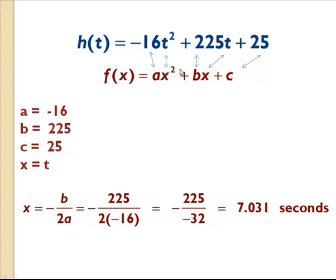When you have a quadratic in the form f(x) = ax² + bx + c, we can take our original equation and match it to standard form. You'll notice instead of a we have negative 16, so a = -16; instead of b we have 225; our c is 25; and instead of x we have t. Plugging in, x equals negative b over 2a gives us negative 225 over negative 32, which is approximately 7.031 seconds.